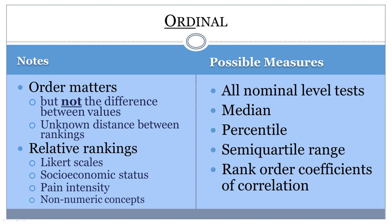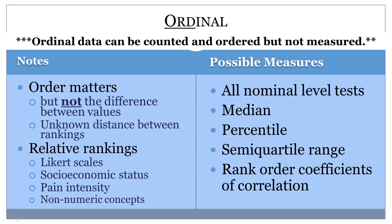To determine central tendency, the categories can be placed in order and a median can now be calculated in addition to the mode. Since the distance between each category cannot be measured, the types of statistical tests that can be used on this data are still quite limited. For example, the mean or average of ordinal data cannot be calculated because the difference between the values on the scale is not known.